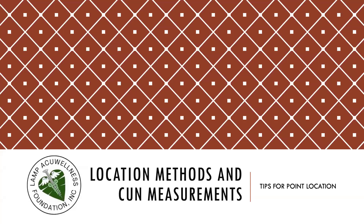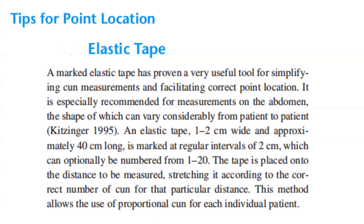Now let's talk about tips for point location. First, we have the elastic tape. A marked elastic tape has proven a very useful tool for simplifying cun measurements and facilitating correct point location. It is especially recommended for measurements on the abdomen, the shape of which can vary considerably from patient to patient. An elastic tape 1 to 2 centimeters wide and 40 centimeters long is marked at regular intervals of 2 cm, which can optionally be numbered from 1 to 20. The tape is placed onto the distance to be measured, stretching it according to the correct number of cun for that particular distance. This method allows the use of proportional cun for each individual patient.